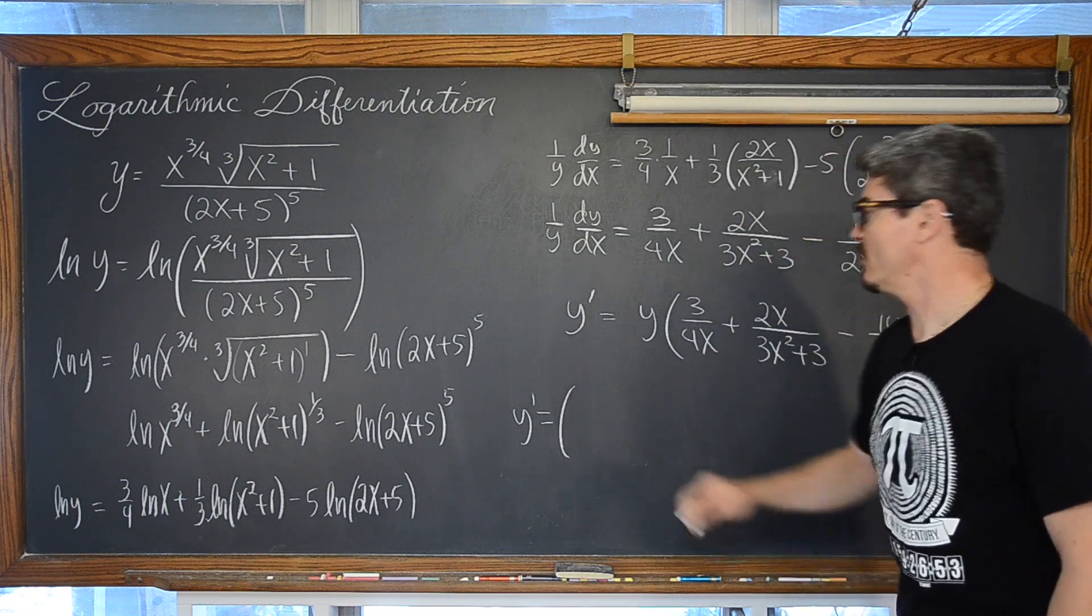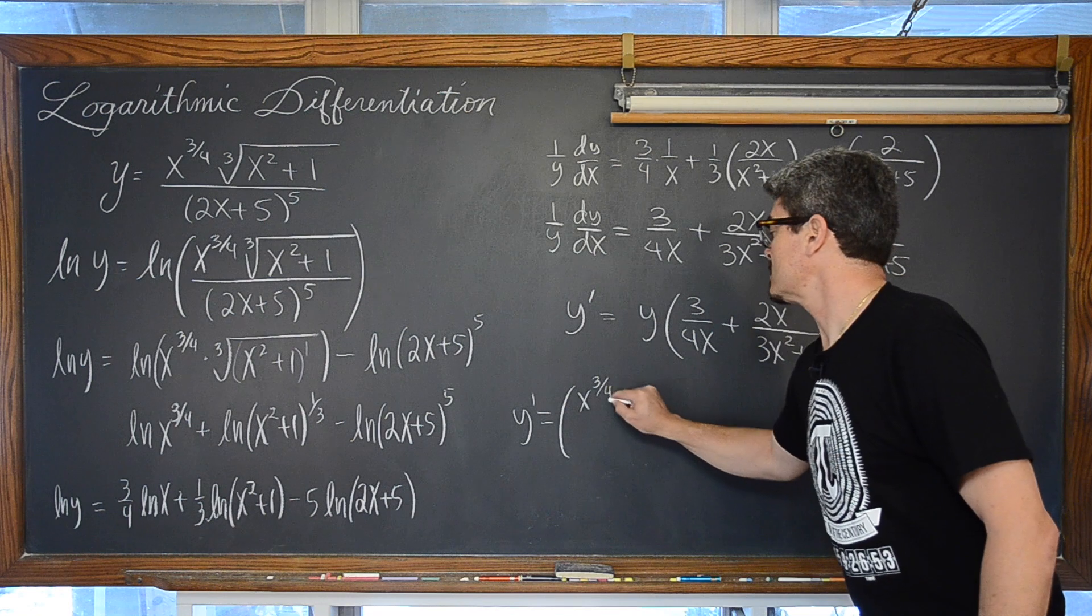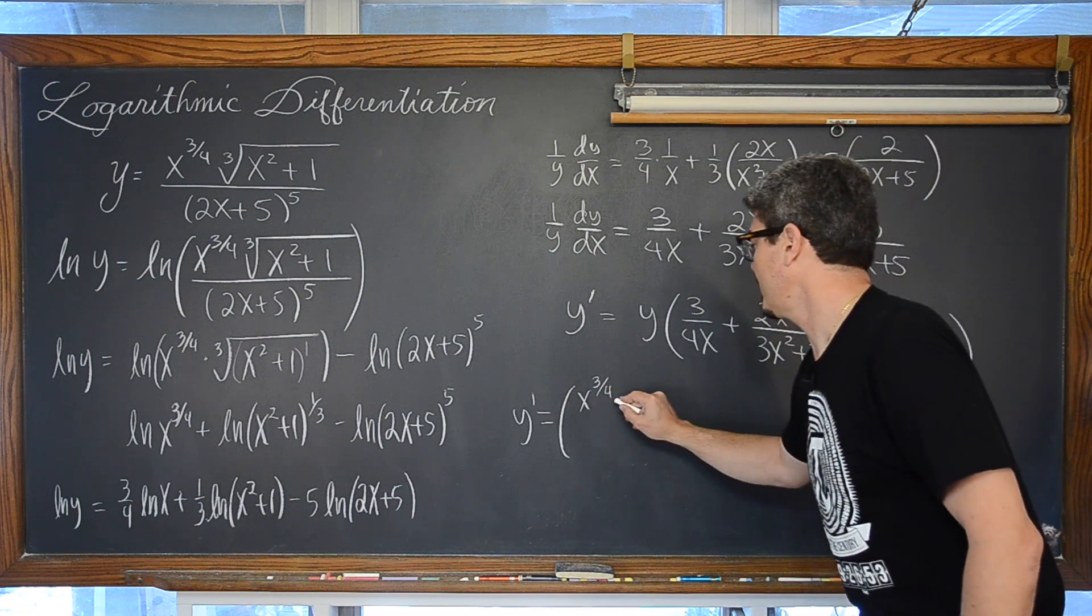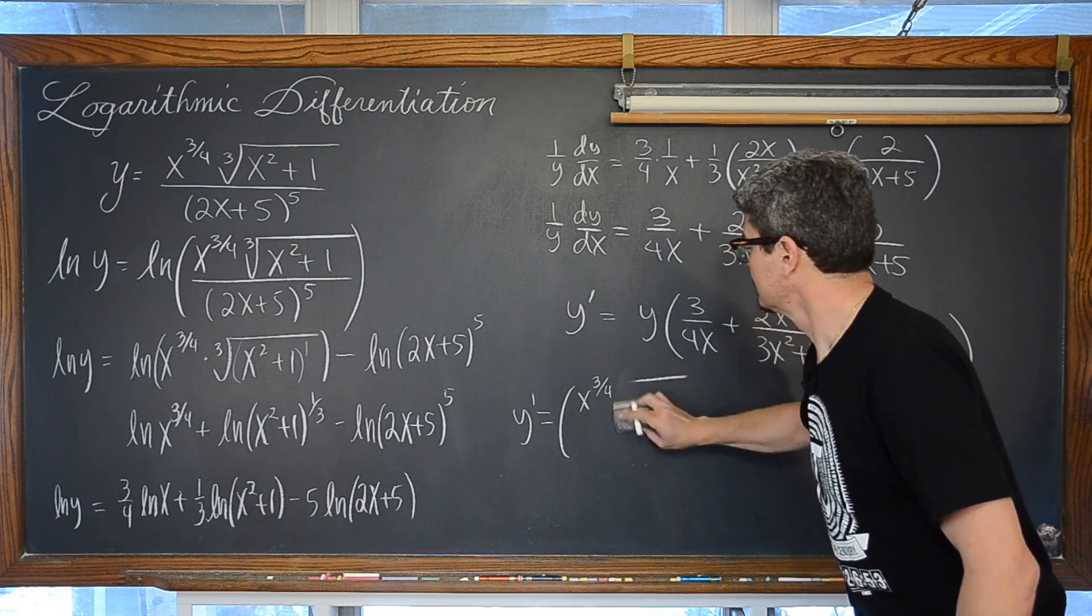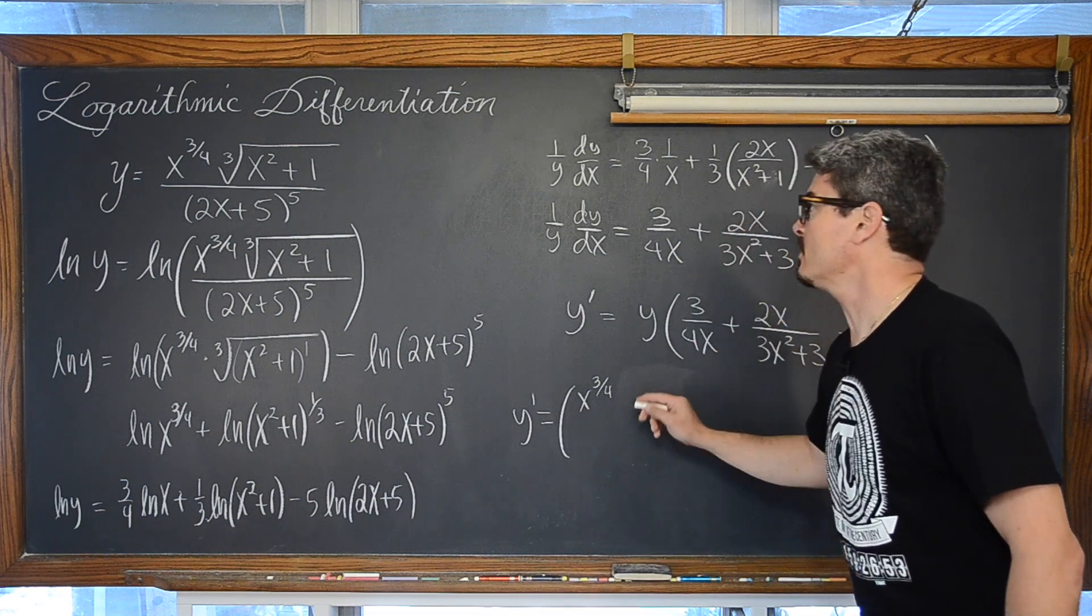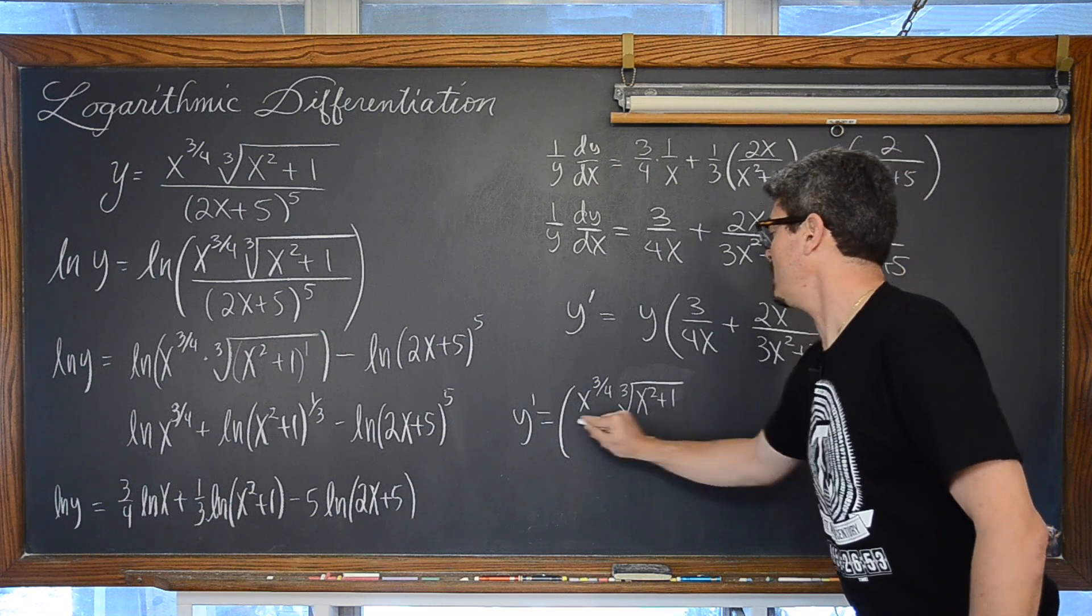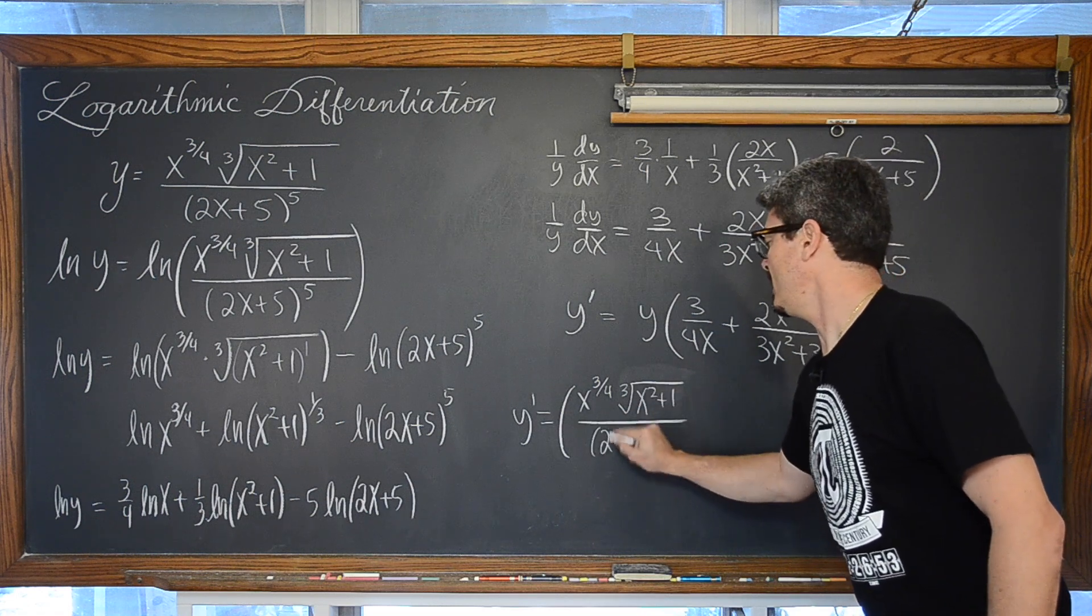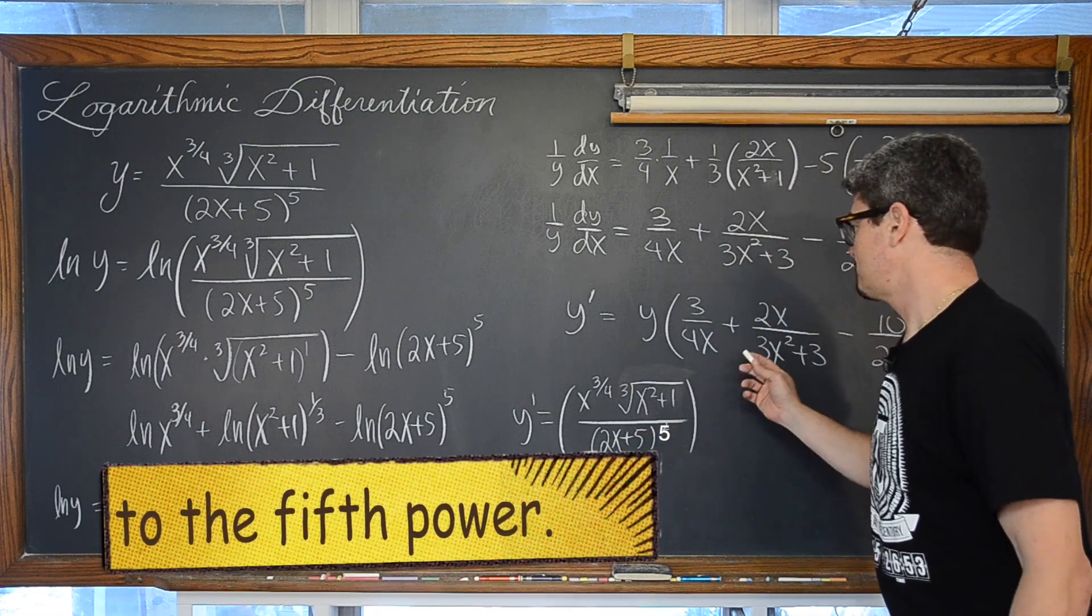y prime is equal to, not a clean answer, but we got there much quicker than we would have had we just been using the product and quotient rule. That version wouldn't be clean either. It is a very neat looking solution. So we have x to the 3/4 times the cube root of x squared plus 1 all over 2x plus 5 squared times,